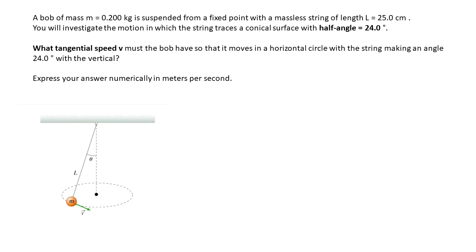We want to know what is the tangential speed v for the ball to move in a horizontal circle trace. That means that the ball is not going to change the altitude, it's not going to change the position in the y direction, but it's going to do a circle in the plane as shown in the figure.